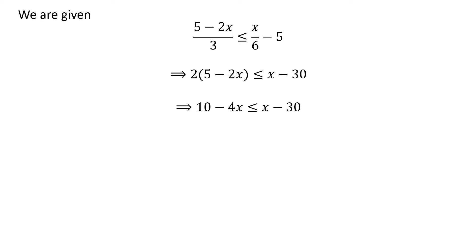Taking the brackets off, we get 10 minus 4 times x is less than or equal to x minus 30.